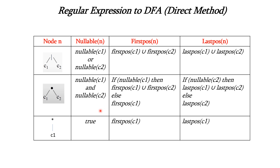For the concatenation operator, nullable will be nullable of C1 AND nullable of C2 — concatenation is nullable only if both C1 and C2 are nullable. For the closure operator, nullable is always true, because closure means zero or more occurrences, so there is always a possibility of zero occurrences or epsilon. So nullable is true for the closure operator.